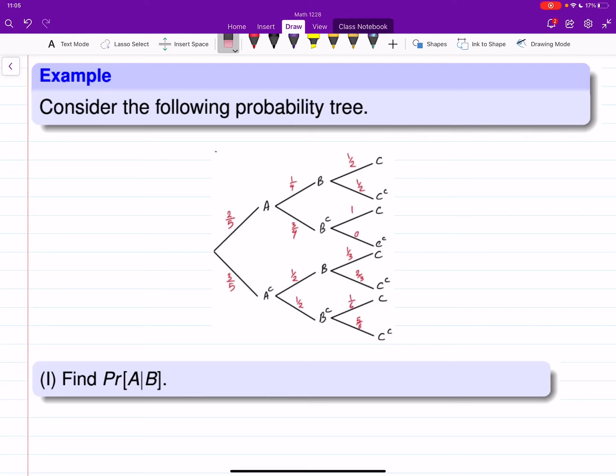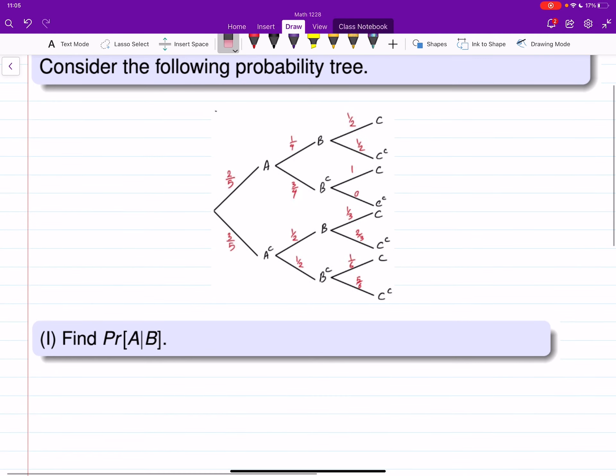Hello everyone. Here in this video we will do another example of Bayes theorem based on a given probability tree. The probability tree is there and we are looking for probability of A knowing B.